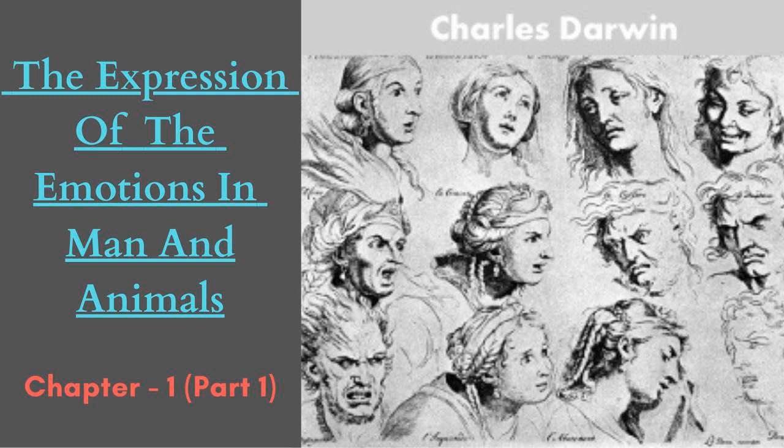Section three of 'The Expression of the Emotions in Man and Animals' by Charles Darwin. Chapter one: General Principles of Expression. Part one: The three chief principles stated. The first principle — serviceable actions become habitual in association with certain states of the mind and are performed whether or not of service in each particular case. Topics include: the force of habit, inheritance, associated habitual movements in man, reflex actions, and associated habitual movements in the lower animals.